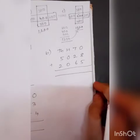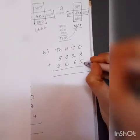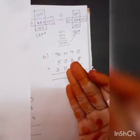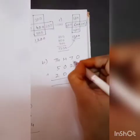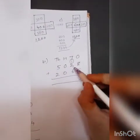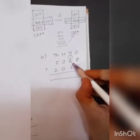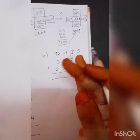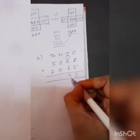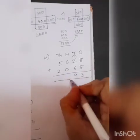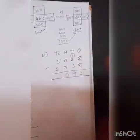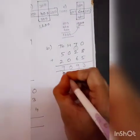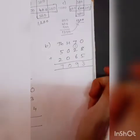B question: starting from the right, 8 plus 5 is 13 - write 3, carry 1. Then 1 plus 2 is 3, 3 plus 6 is 9. Then 0 plus 0 is 0 - if you add any number with 0 you get the same number. Finally 5 plus 2 is 7. So the answer for B is 7,093.